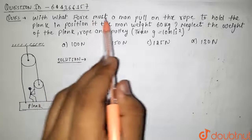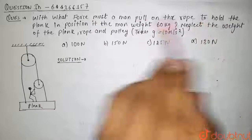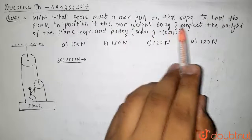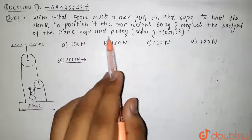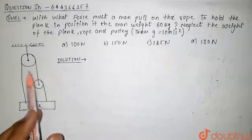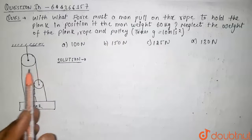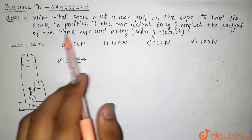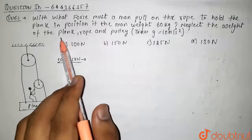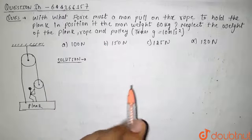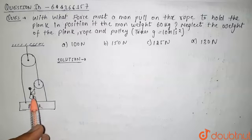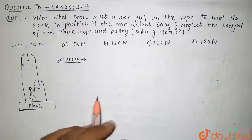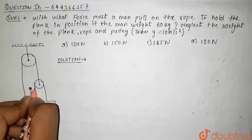Today's question is: with what force must a man pull on the rope to hold the plank in position, if the man weighs 60 kg? Neglect the weight of the plank, rope, and pulley. We have a system of a pulley, man, and plank, and we need to find the force the man pulls on the rope. Let us assume this force is T.